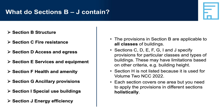Section B contains structural provisions that apply to all classes of buildings. Sections C to J specify provisions that generally apply to particular classes and types of buildings. However, these provisions don't necessarily apply to all buildings of a particular classification — they are sometimes limited to buildings that meet other criteria as well, such as building height, floor area, number of people the building will accommodate, or the layout of the building.